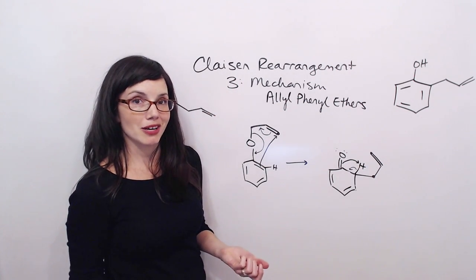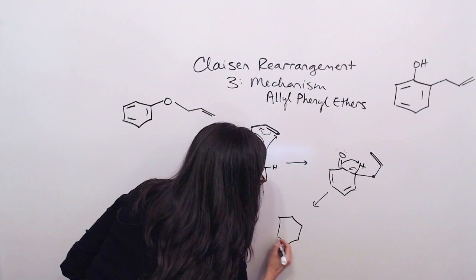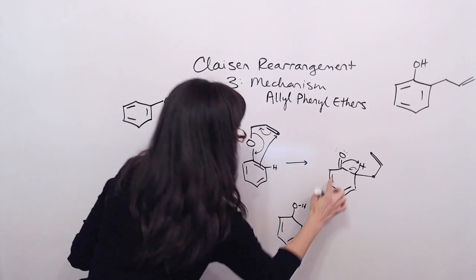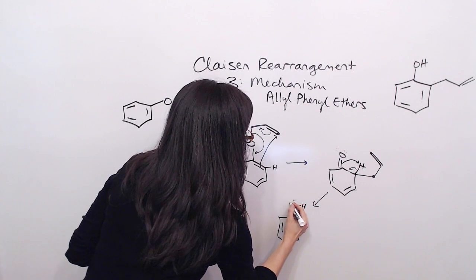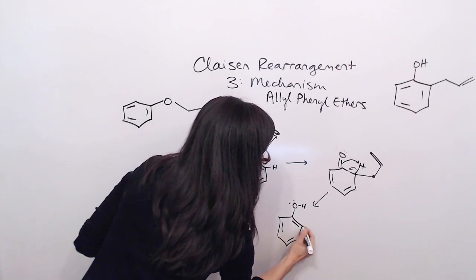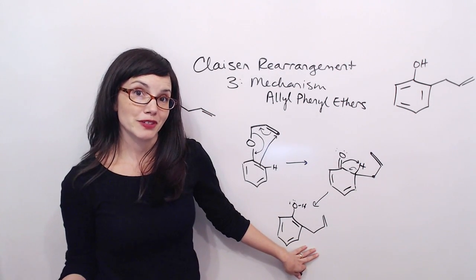It's a two-step process. And our final product, then, has O bound to H, a double bond here, and our allyl group on carbon 2 of phenol.